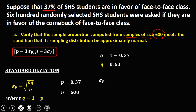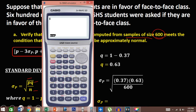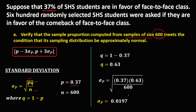To solve for the standard deviation, we compute the square root of P times Q over N: square root of (0.37 times 0.63 divided by 600). Using a calculator — open parenthesis, 0.37 times 0.63, divide by 600, close parenthesis — the standard deviation is 0.0197.